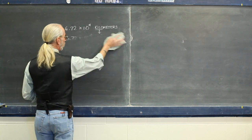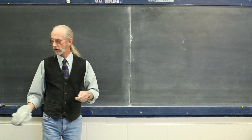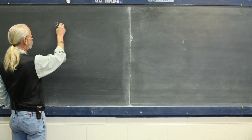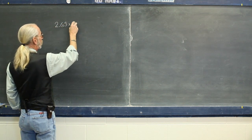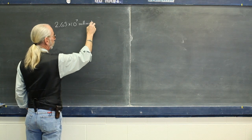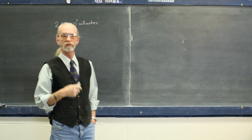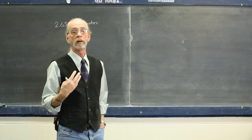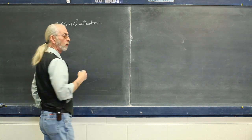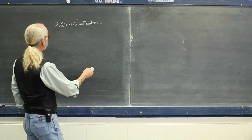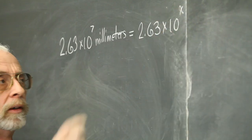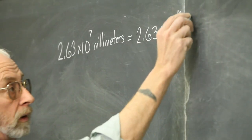Frequently people have trouble with conversions that present themselves in this fashion. For instance, we could have something like this: two point six three times ten to the seventh millimeters, and we want to convert this into kilometers. A way to handle that would be to write it somewhat algebraically — two point six three times ten to the something, we don't know, kilometers.